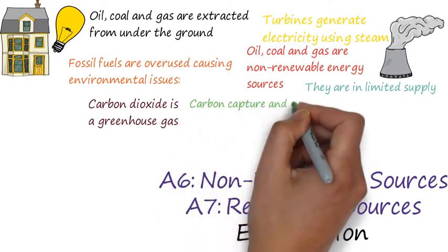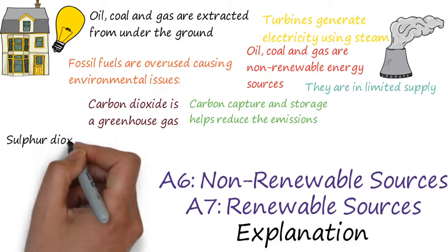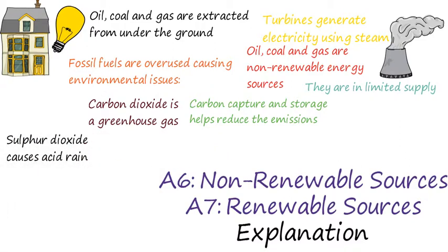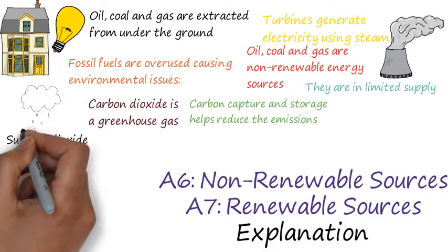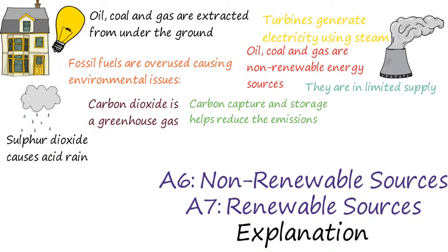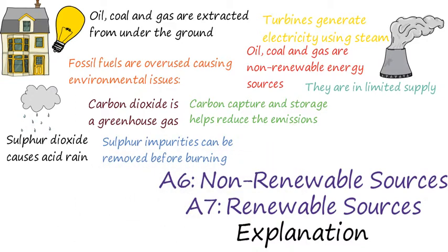This is a very serious situation, but carbon capture and storage (CCS) helps reduce the emissions by capturing carbon and storing it in old oil and gas fields. Another negative effect is that burning fossil fuels produces sulphur dioxide. This chemical rises into the atmosphere and reacts with rain clouds, which produces acid rain when they fall. Acid rain can seriously affect ecosystems by changing the pH of ponds and rivers. However, these sulphur impurities can be removed before burning.